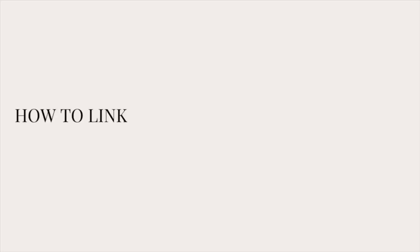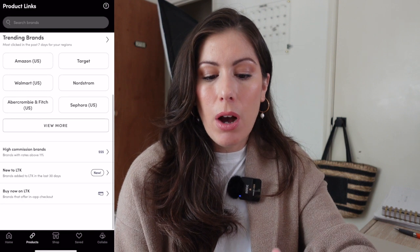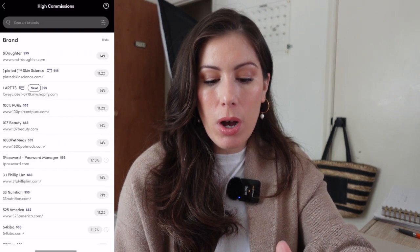If you want to link products on your mobile phone, then you will just go to the LTK Creator app. Whenever you go on there at the bottom, you will see the little link picture that says products. Once you click on there, you'll be able to pull up any website and link from there. You can also check out high commission brands — if there's a product available at multiple retailers, you can see which one is going to give you more bang for your buck. Also recommend linking to different retailers because that might help your conversion rate.